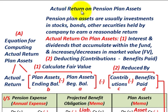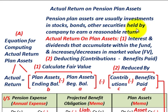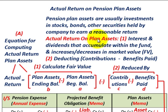What we're going to be going over here is the actual return on pension plan assets. Pension plan assets are usually investments in stocks, bonds, and other securities that are held by the company to earn a reasonable return on the pension plan. We're going to be looking at what we call the actual return on the plan assets.